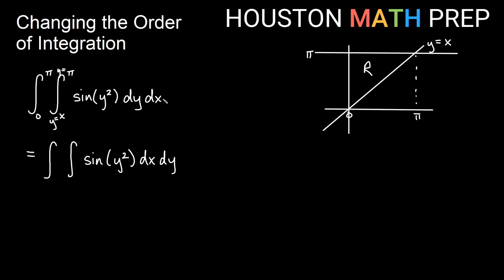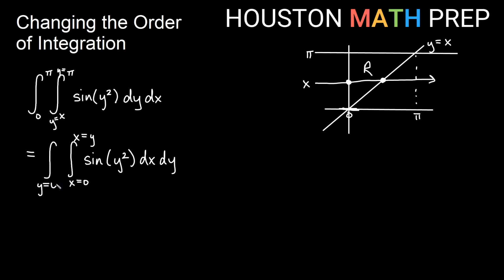Now changing to dx dy, let's fix a y value and draw through in the x direction. The way I go in and out of the region: I enter on this vertical line, which is x equals 0, and I come out of the region on this diagonal line. I don't say y equals x because I'm integrating dx — I need x equals, so I say x equals y. For our outer bounds we just need constants: the lowest y value is 0 and the highest is y equals pi. So the integral is from 0 to pi, integral from 0 to y, sine of y squared, dx dy.